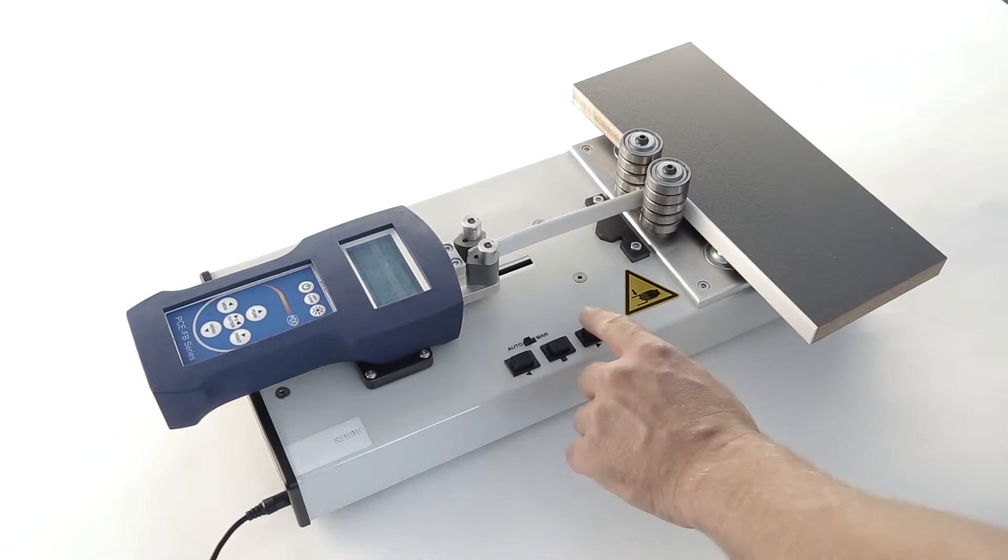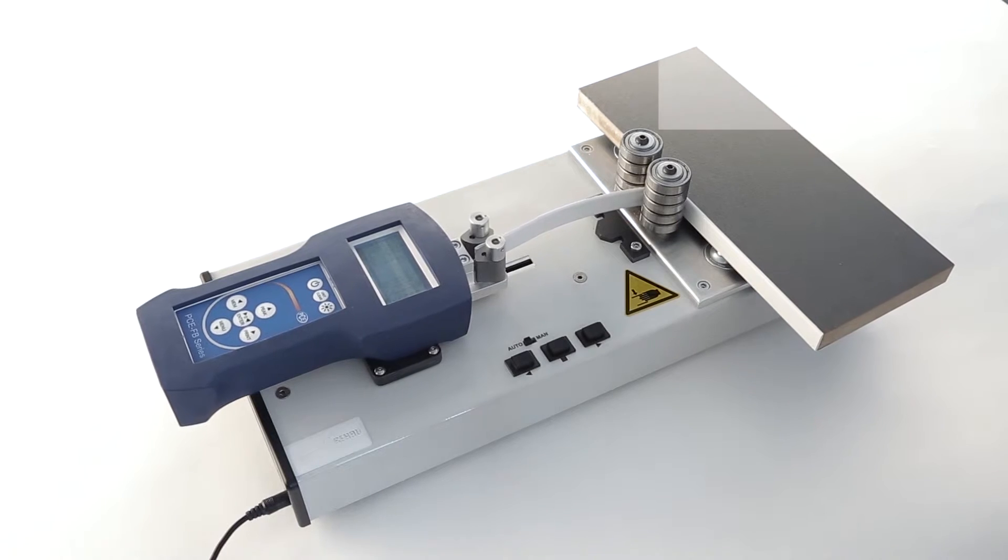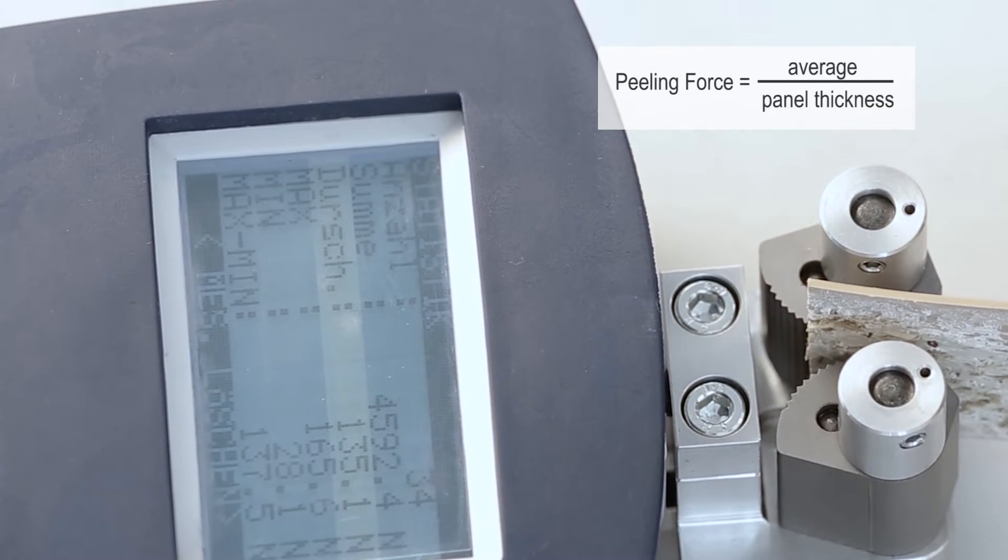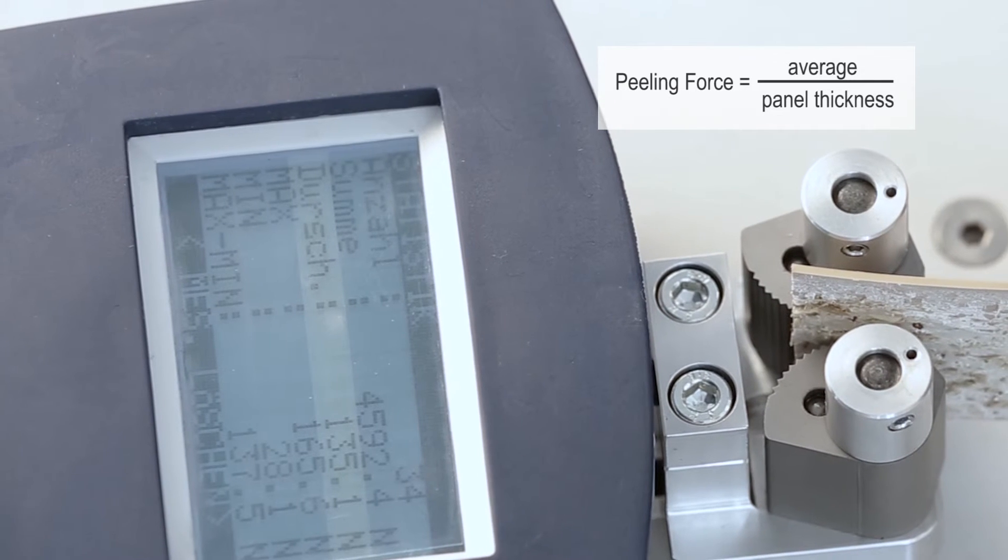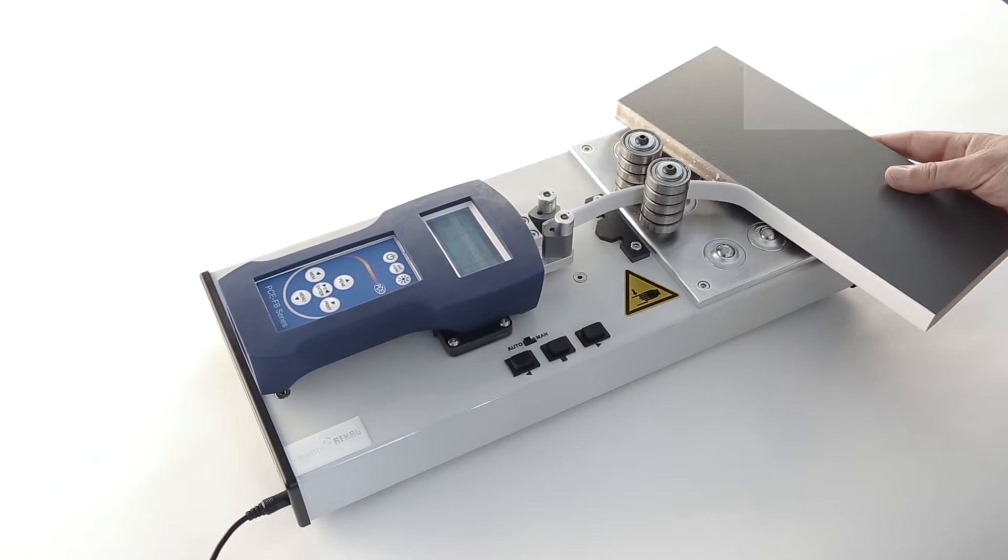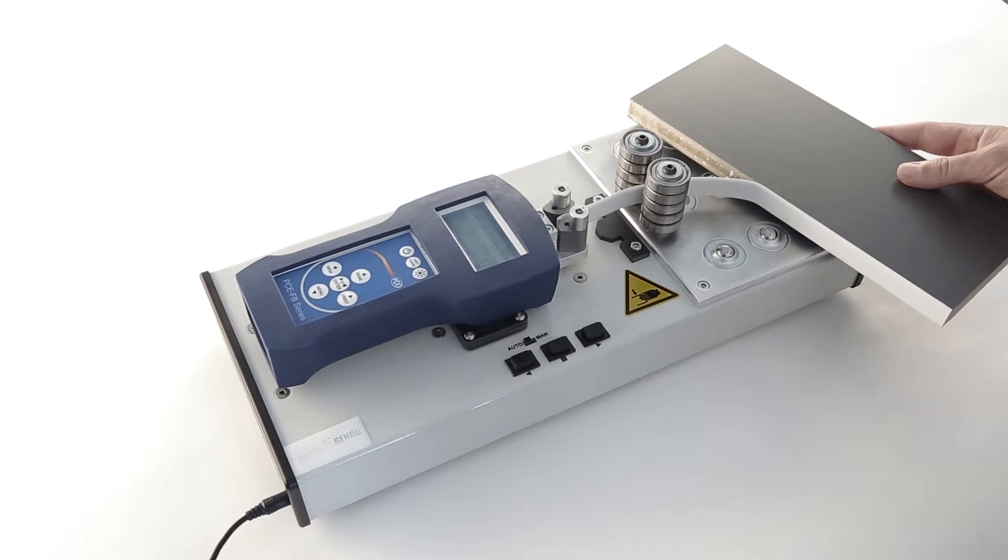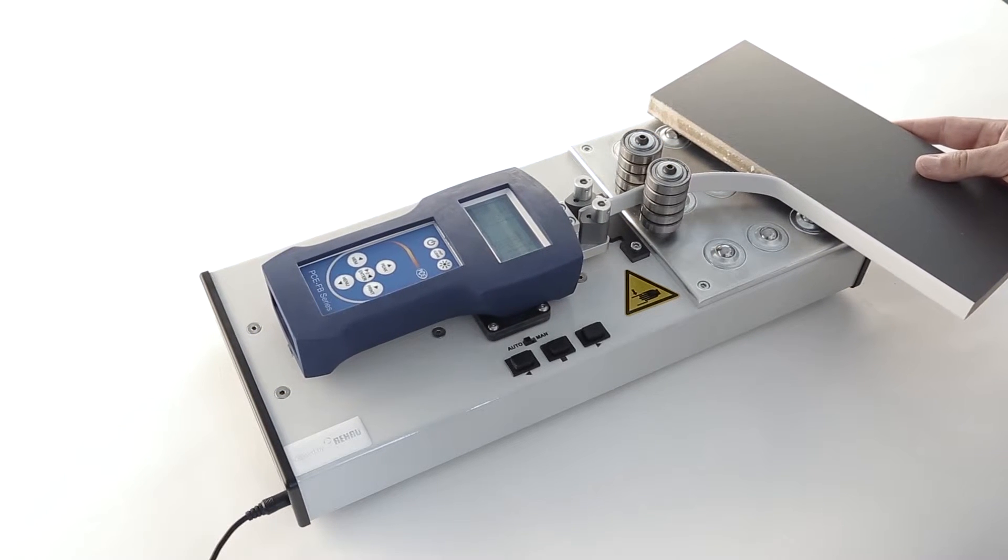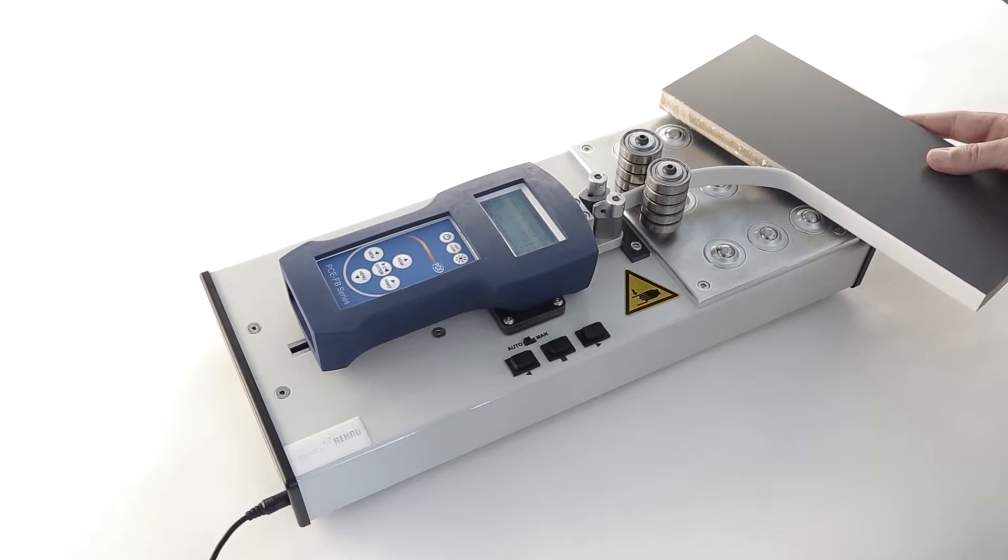Stop the carriage in automatic mode and move the carriage against the test direction. Now you can read the results of the measurement on the display of the force measurement equipment. When releasing, hold the specimen tightly so that it does not fall down.